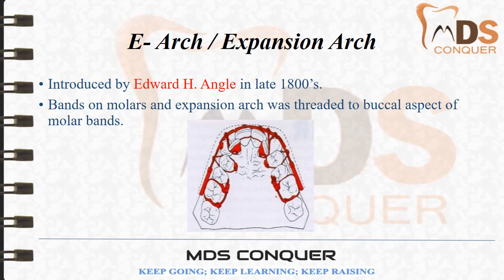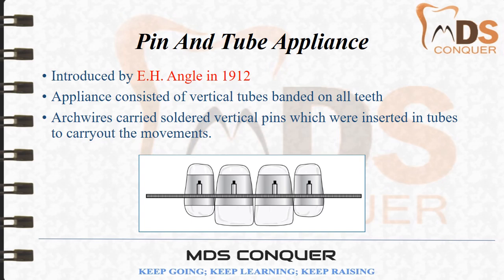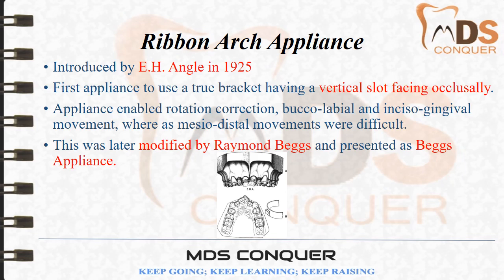Angle improved his appliance and introduced the pin tube appliance in 1912, consisting of vertical tubes banded on all teeth with arch wires carrying soldered vertical pins inserted in the tubes. Only tipping movements were possible. It was later modified by Angle in 1925 into the ribbon arch appliance — the first appliance to use a true bracket having a vertical slot facing occlusally. This enabled rotation correction, buccolabial, and incisogingival movement, though mesiodistal movements were difficult.